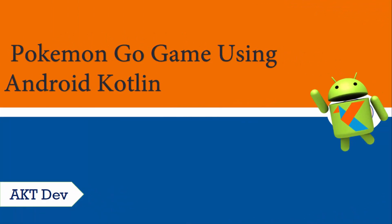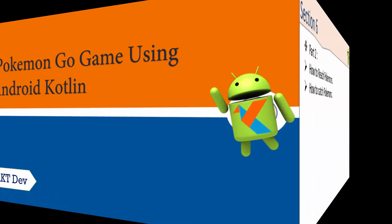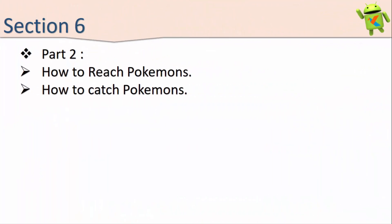Hey, hello everyone, welcome back to Pokémon Go game using Android Kotlin. We are in Section 6, Part 2. I created this second part because a small portion was left from the last section. In this section we will learn how to reach a Pokémon as well as how to catch that Pokémon. Let's start.